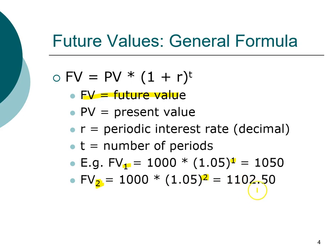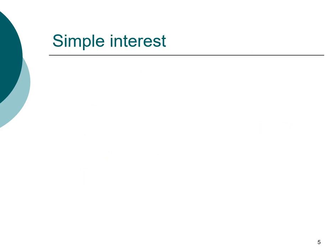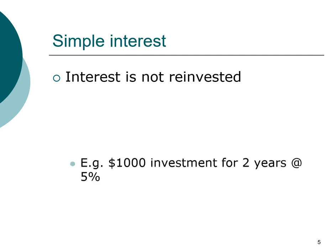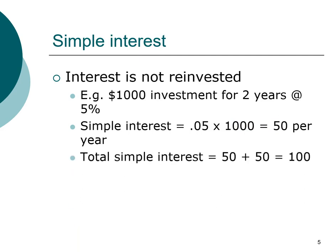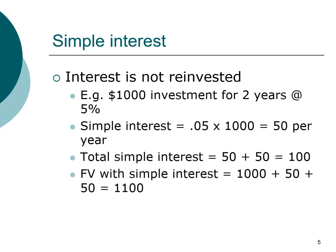Compounding is in contrast to some specific cases where you do not earn compounding — we call that simple interest. Simple interest is a case where interest is not reinvested. You get your fifty dollars in the first year, spend it, and start fresh with one thousand dollars every year. So at five percent simple interest on one thousand dollars, you earn five percent on one thousand dollars every single year, giving you one hundred dollars total interest over two years and a future value of eleven hundred dollars.